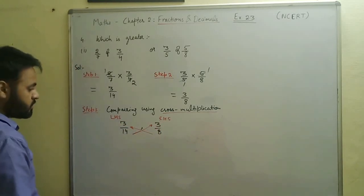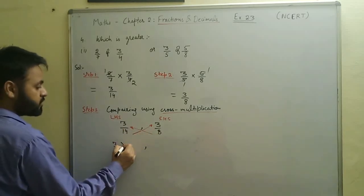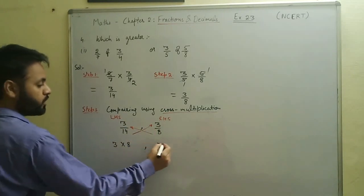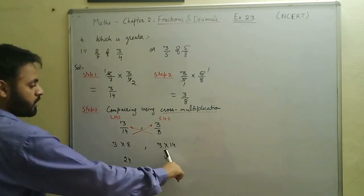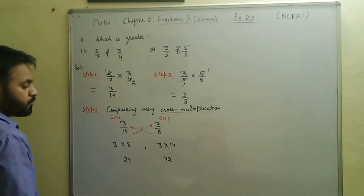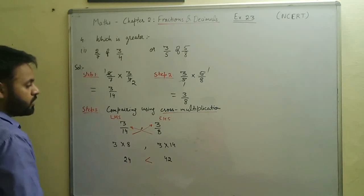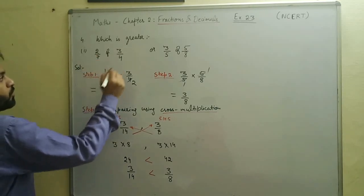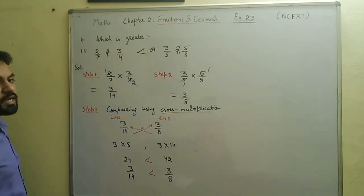In cross multiplication, three stays on the left and eight shifts to the left side; three stays on the right and fourteen shifts to the right side. Three times eight is twenty-four and three times fourteen is forty-two. Since forty-two is greater than twenty-four, three by fourteen is less than three by eight. Therefore, two sevenths of three by four is less than three fifths of five by eight. That's all for this lecture, thank you.